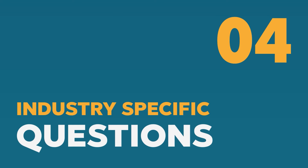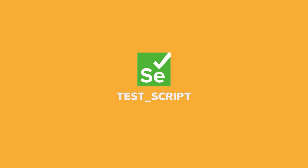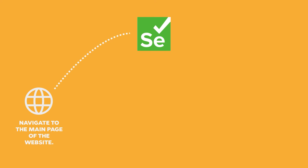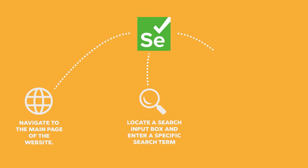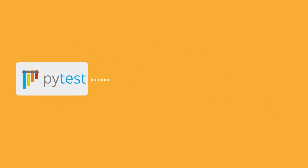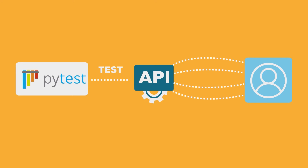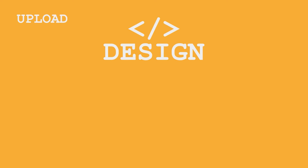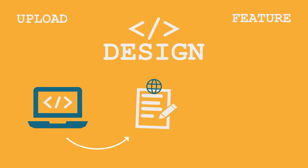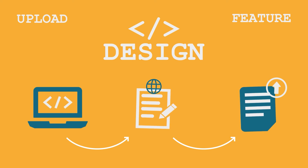Now we're getting into position-specific Python interview questions. For QA engineering, you might get questions like: create a Selenium test script in Python that navigates to a web page, locates a search input box, enters a search term, submits it, and waits for results to load. Or: write a PyTest function to test an API endpoint that retrieves user details via GET /users/{user_id}, returning a JSON object. Or: design an automated test for a file upload feature that navigates to a page, selects a file from the local system, and uploads it via a web form.